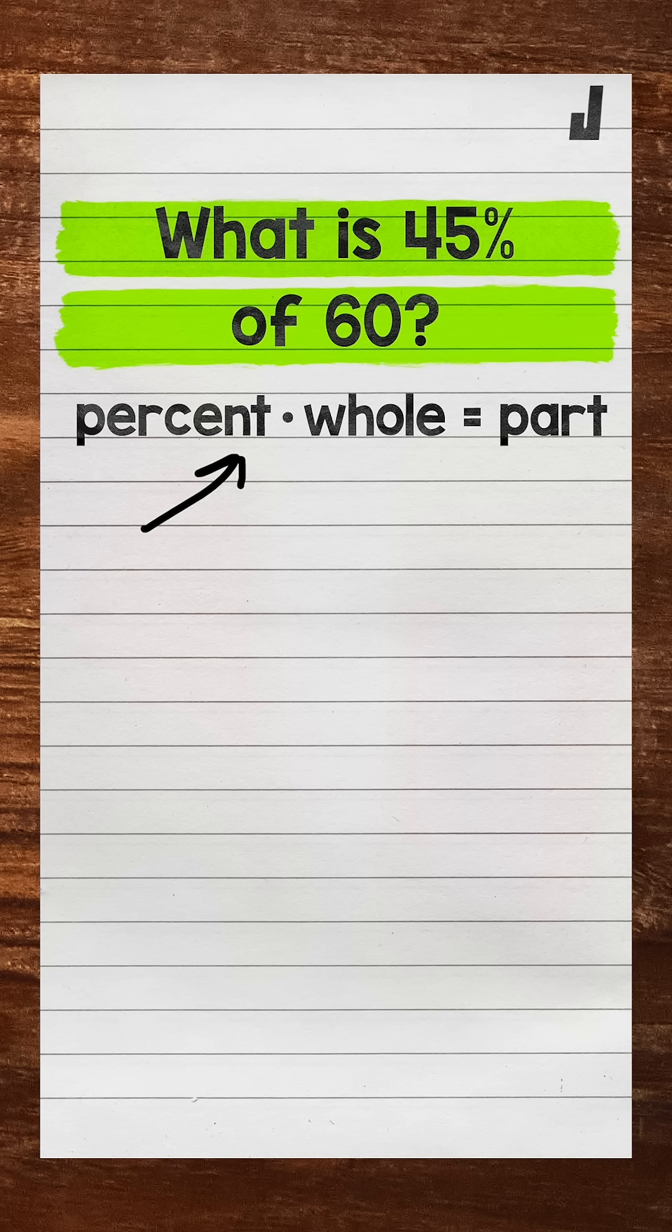We'll use P for percent. So P for percent times W for the whole equals A for the part. Now let's plug in what we are given. And I do want to mention, as far as figuring out the percent, whole, and part...